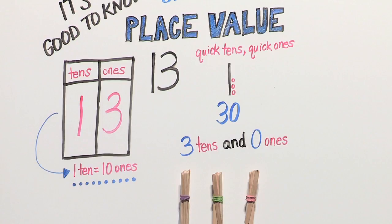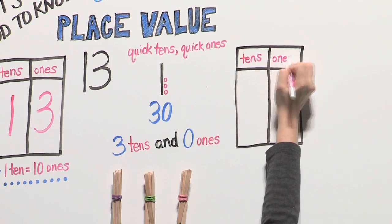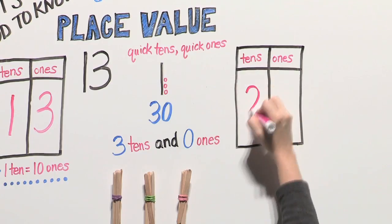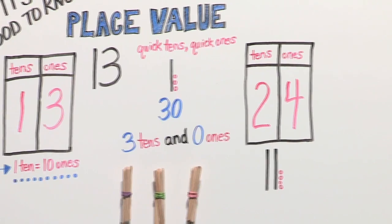What about 24? What makes up the number 24? Two tens and four ones. We can draw this as two tens and four ones. Now you can talk about place value with your child.